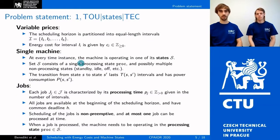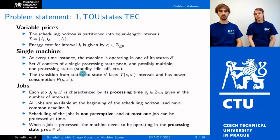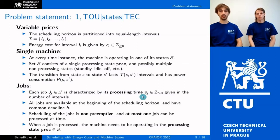Now let's look at the problem statement more formally. We are given a set of equivalent intervals that partition the scheduling horizon, each characterized by a cost. We assume a single machine environment where the machine operates in one of the possible states at every time instant. The set of states consists of a single processing state and at least one non-processing state such as standby, idle, or off. The transition between two states takes some time, measured by number of intervals, and has power consumption given by function p. We are also given a set of production jobs that need to be processed within the horizon, each characterized by processing time p in number of intervals. The scheduling is non-preemptive and at most one job can be processed at a time.